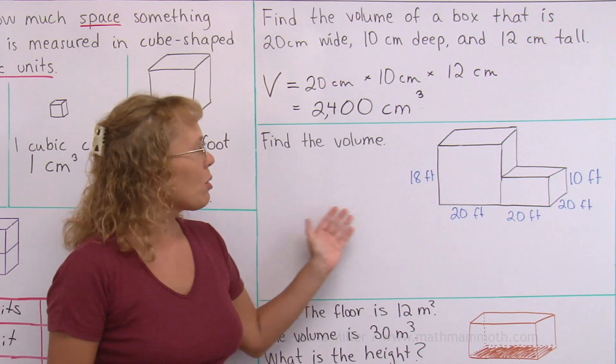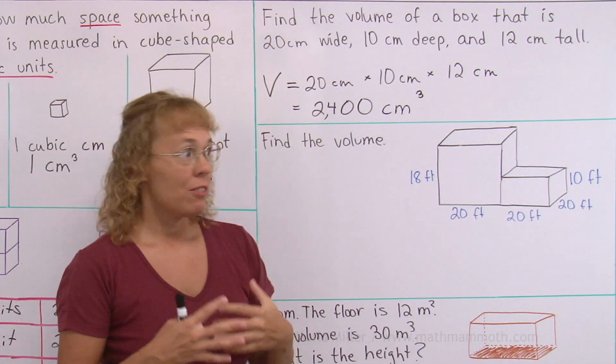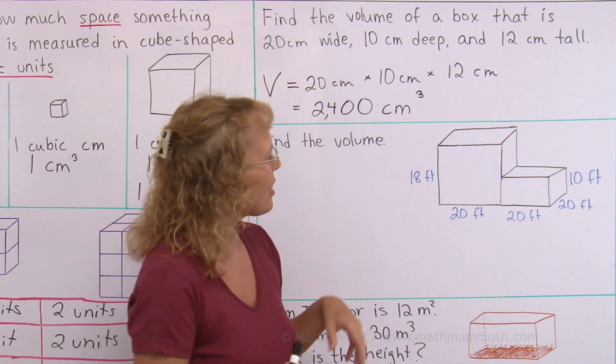In this problem, we're going to find the total volume of this figure and it consists of two rectangular prisms or two boxes, so to speak. Maybe it is a building.